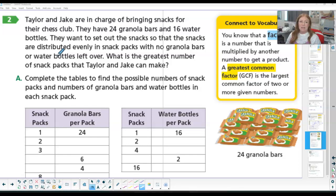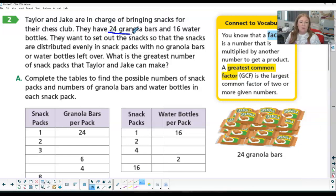For 2.3, task 2, it tells us that Taylor and Jake are in charge of bringing snacks for their chess club. They have 24 granola bars and 16 water bottles. They want to set out the snacks so that the snacks are distributed evenly in snack packs with no granola bars or water left over. What is the greatest number of snack packs that Taylor and Jake can possibly make? So we're trying to group these things together so there's no leftovers.